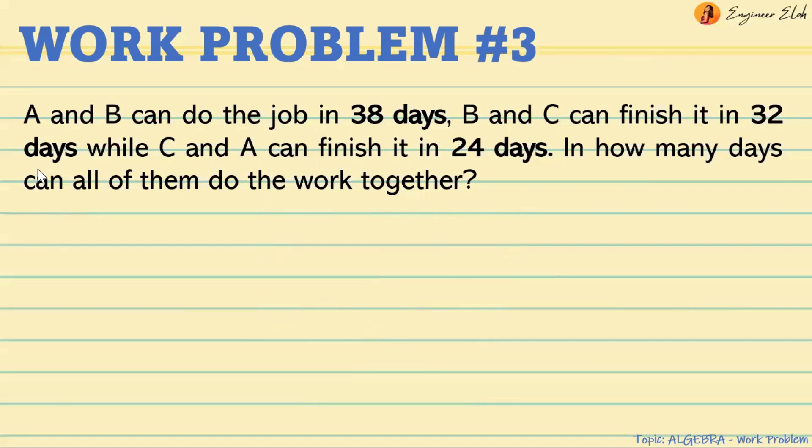So that is how you solve this problem. For problem number three: A and B can do the job in 38 days, B and C can finish it in 32 days, while C and A can finish it in 24 days. In how many days can all of them do the work together?